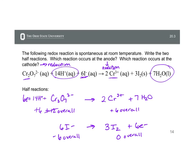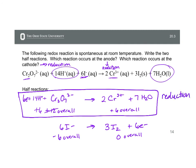Remember, reduction is gain of electrons. And in this half reaction, we can see that the reactants are gaining electrons. So this is reduction. And reduction occurs at the cathode. So this is the reaction that occurs at the cathode.